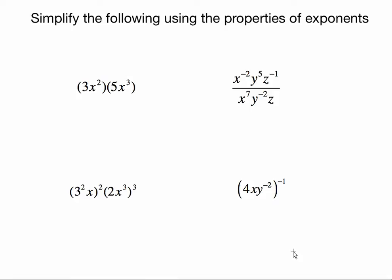In this video I'm going to go over how to use the properties of exponents to simplify some expressions. These are the four examples I will be going over. One is just a product of two expressions. One contains negative exponents as well as positive and it's written as a ratio of two expressions. Another contains two expressions that are themselves being raised to powers. And finally we have an expression with positive and negative exponents where that whole expression is being raised to a negative exponent.